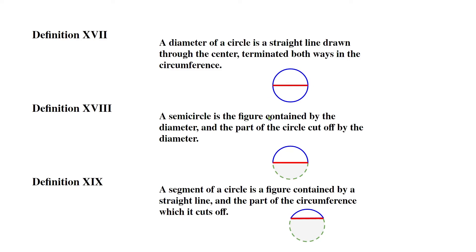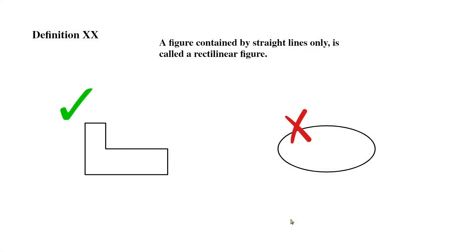Definition XIX: A segment of a circle is a figure contained by a straight line and the part of the circumference which it cuts off. It's kind of like a semicircle, but in this case it doesn't have to be exactly half of the circle and it doesn't have to be cut by the diameter.